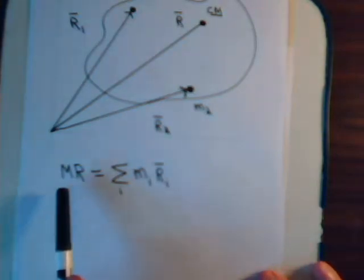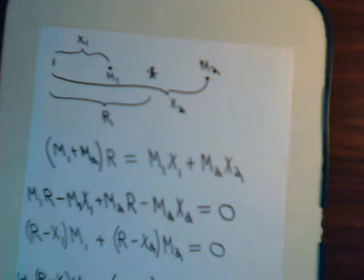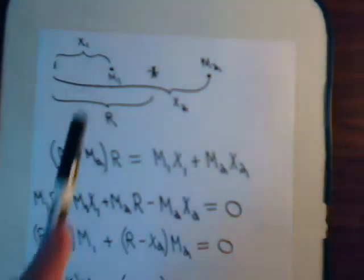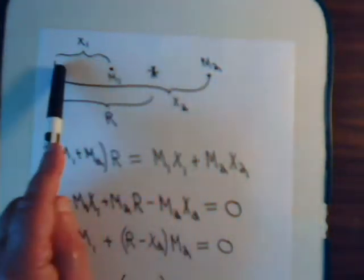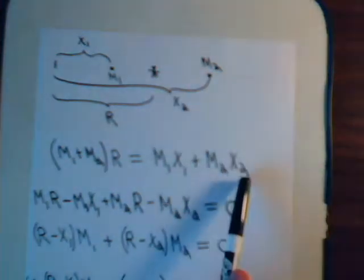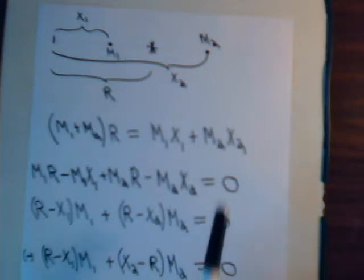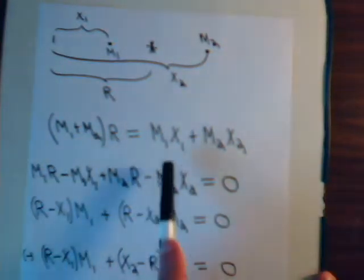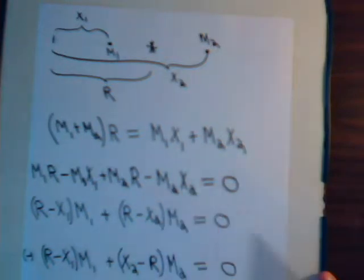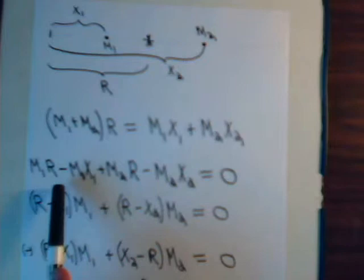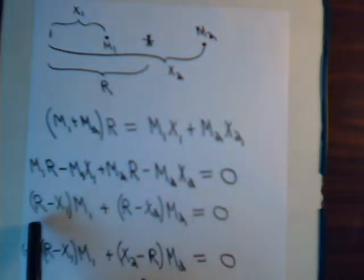And the way this is set up is the total mass of the system times the length of its position vector. Here the total mass is just m1 plus m2 times r. That has to equal m1 times the length of its position vector, x1, or this first moment, plus m2 times the length of its position vector, x2. Now, let's just take everything over to one side of the equation. So we have m1 r minus m1 x1 plus m2 r minus m2 x2 equals 0.